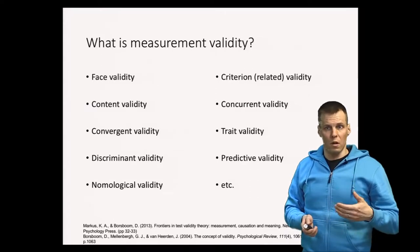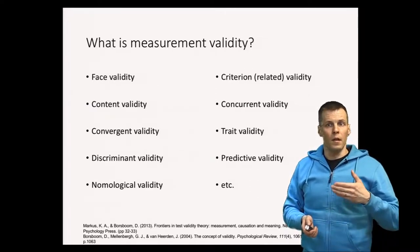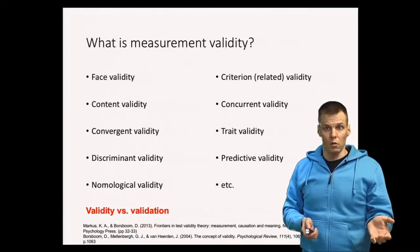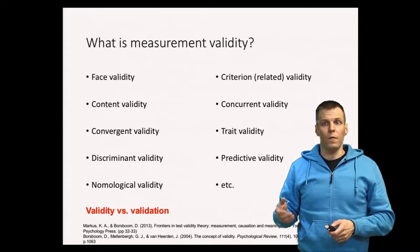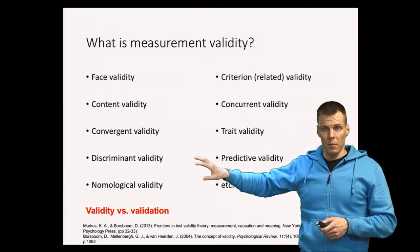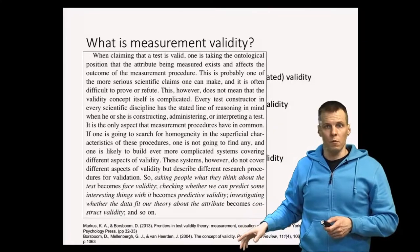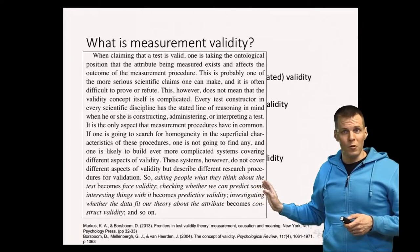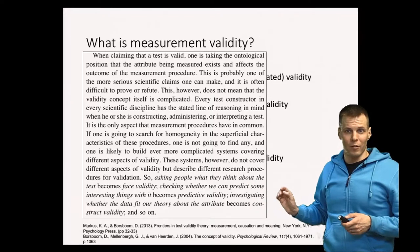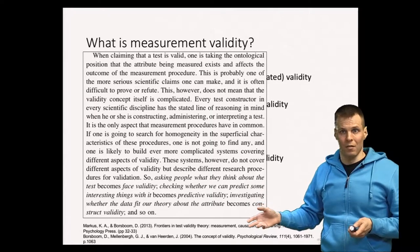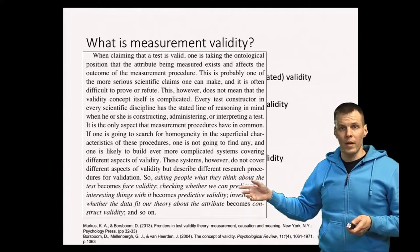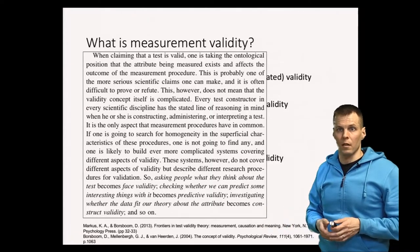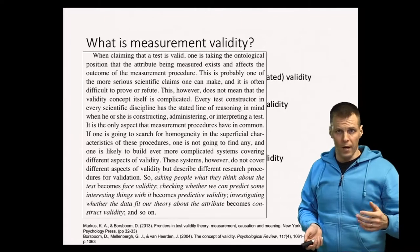One way to start understanding this literature is to recognize the difference between validity and validation. Validity refers to whether the indicator measures what it is supposed to measure. Validation refers to different ways that we can argue or assess validity. These concepts are mostly focused on validation. As Denny Borsboom's article in Psychological Review notes, these terms originate from questions such as asking people whether they think the measurement is valid — that's face validity — or whether the measure can predict something useful — that's predictive validity.